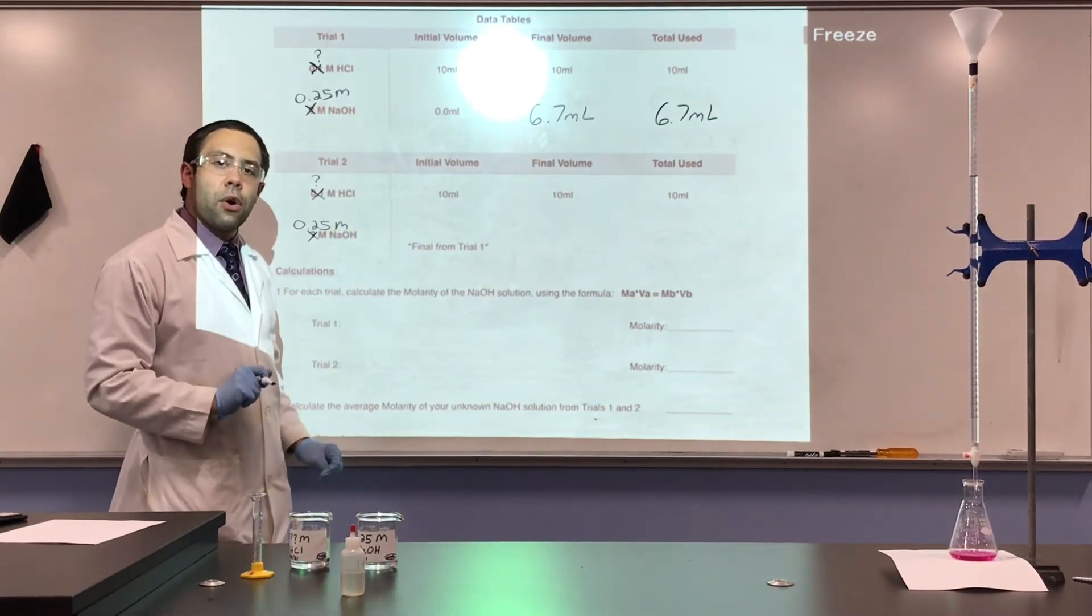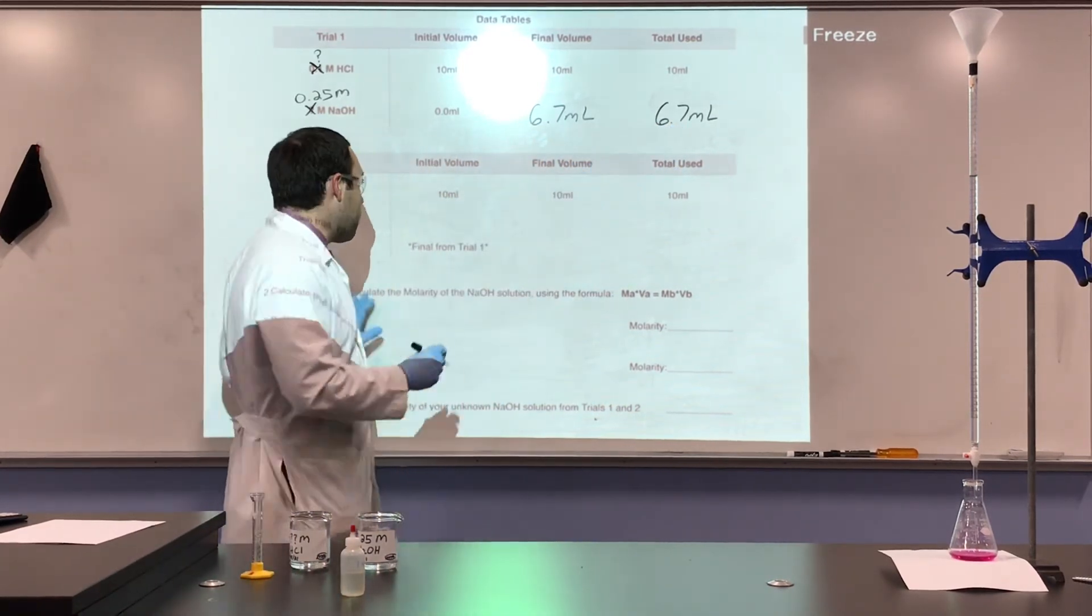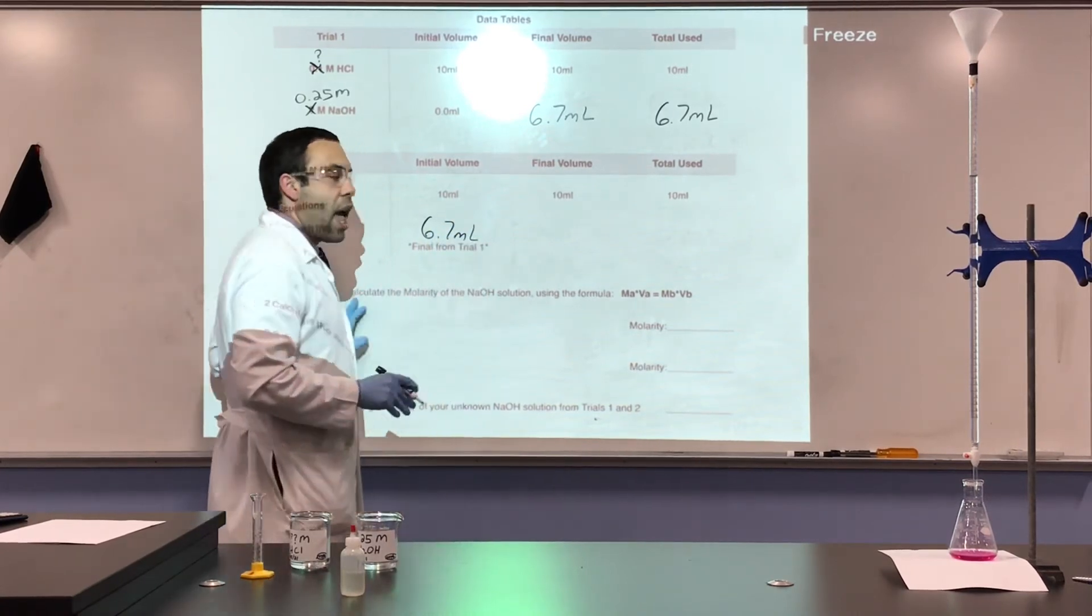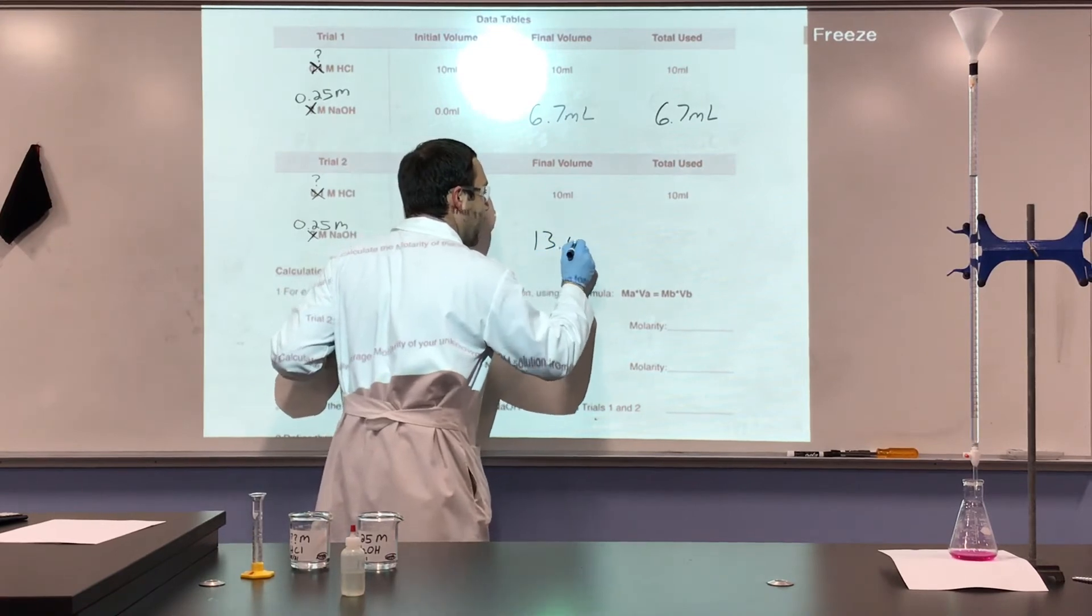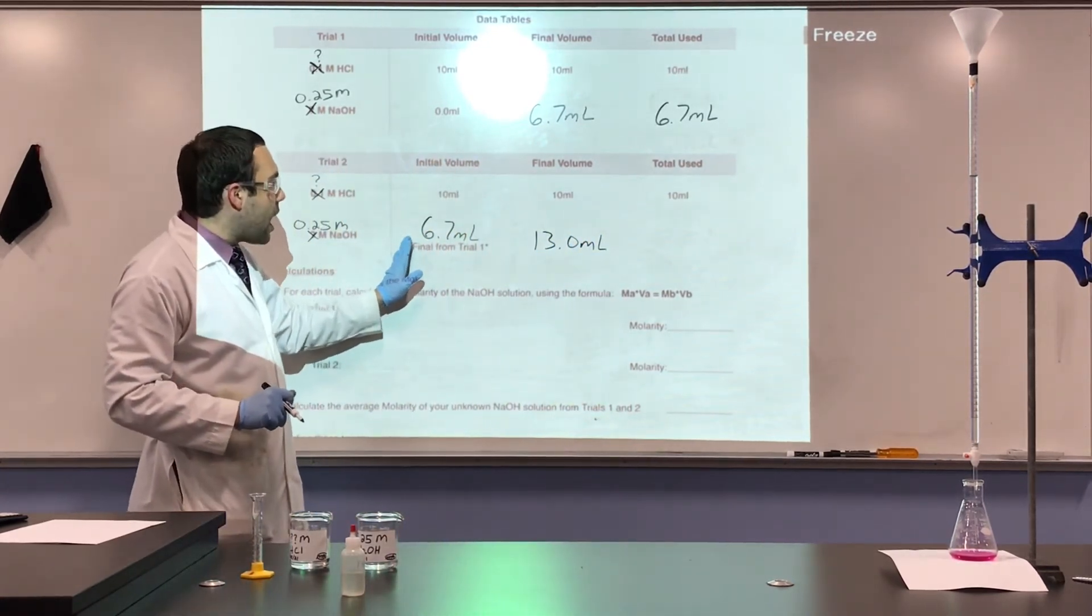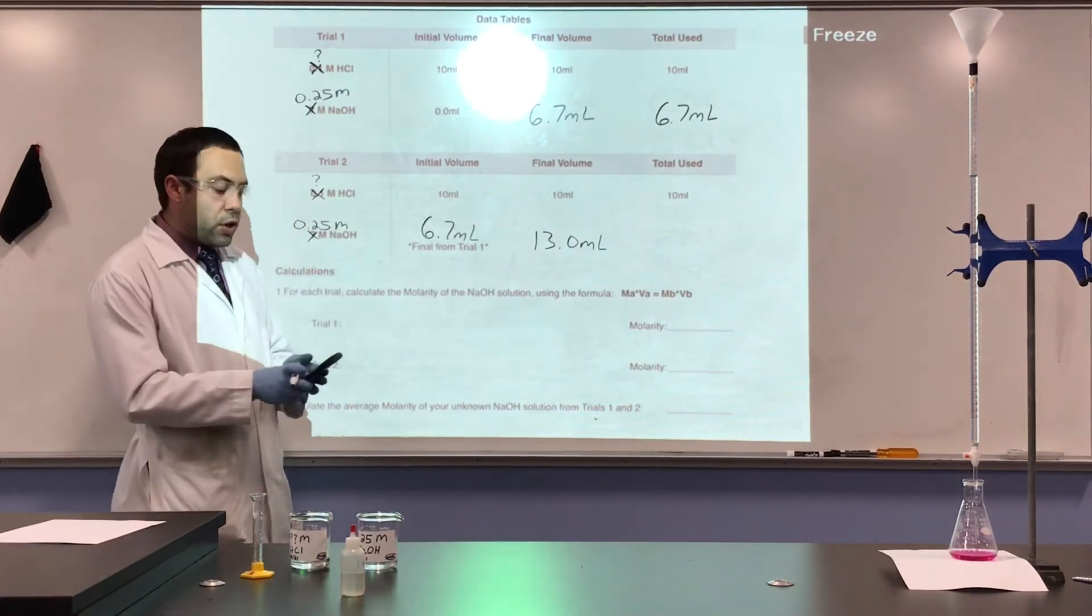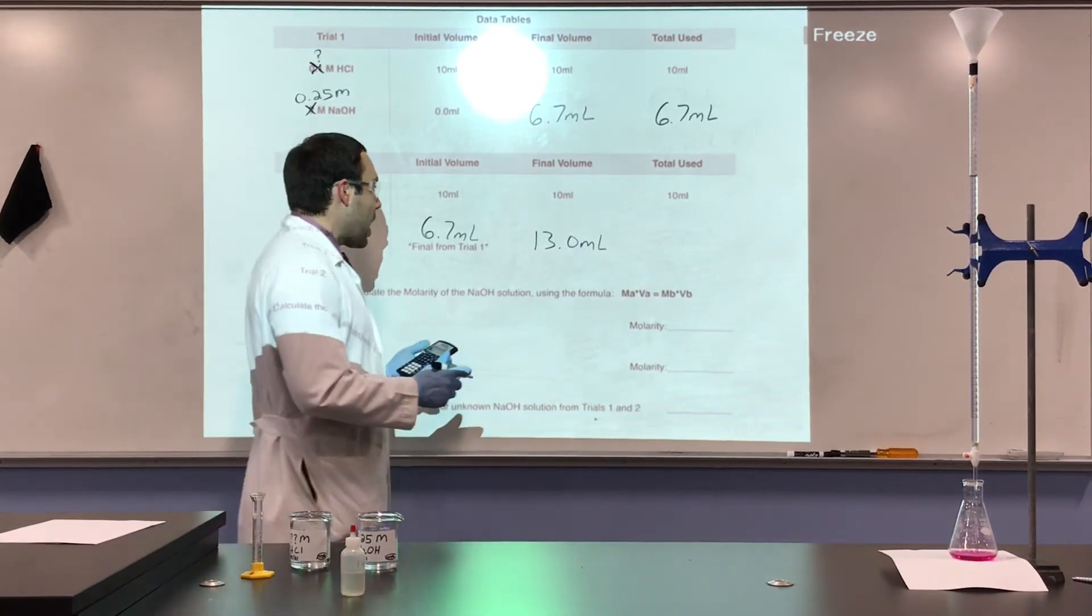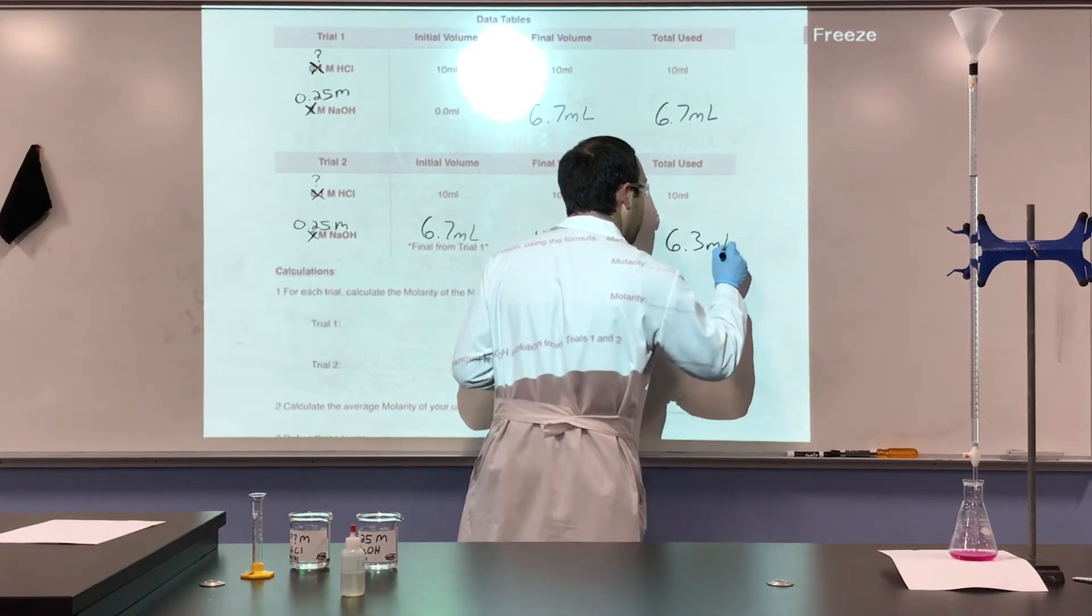Trial two, we didn't start at zero. We started off at the end point of trial one. So we started at 6.7 milliliters. And if you remember, we went down to exactly 13.0 milliliters. So this time, we didn't use 13, we have to subtract these two numbers. So 13 minus 6.7 is going to be 6.3 milliliters.